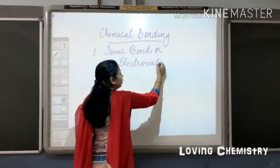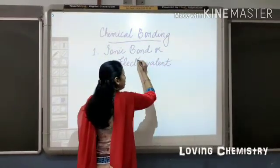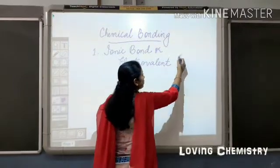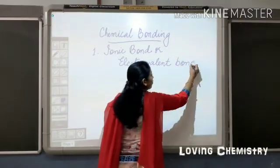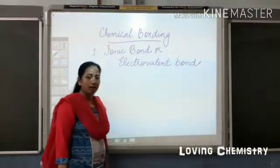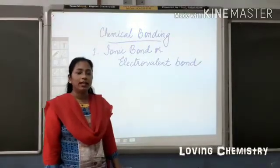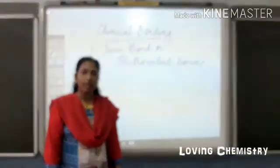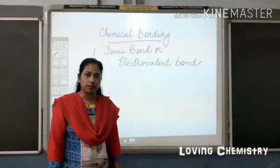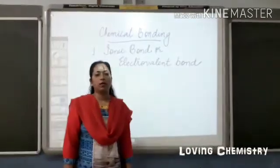So what is an electrovalent bond? The bond formed by the complete transfer of electrons from one atom to another is called an electrovalent bond. And the compounds thus formed are called electrovalent compounds.